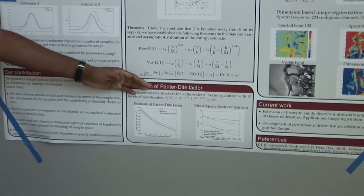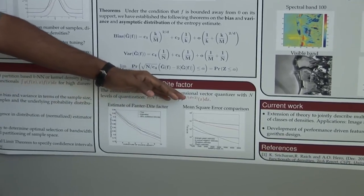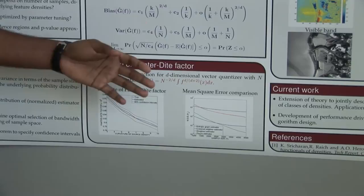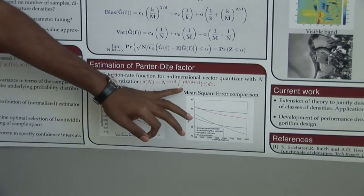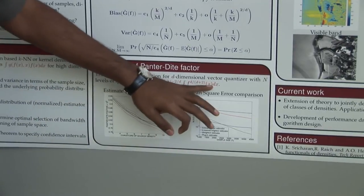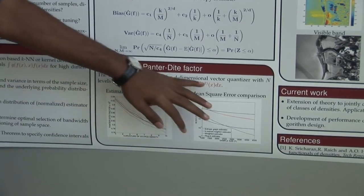As a direct application of my work, I estimate the Panter-Dite factor, which is the mean squared error in an n-level d-dimensional vector quantizer. It comes down to estimating the Renyi entropy, and I can use my theory directly to estimate this quantity.